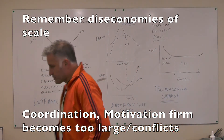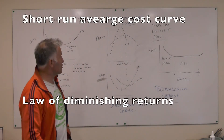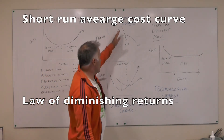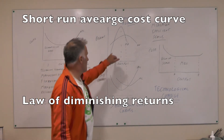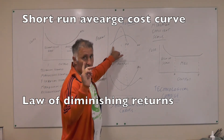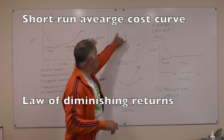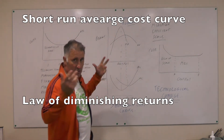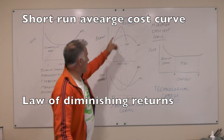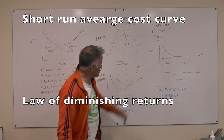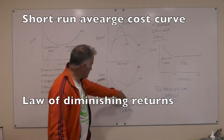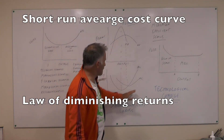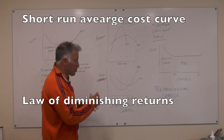In the short run, of course, we always have one fixed factor of production — this is the law of diminishing returns. Marginal product is rising: with five acres of land and one worker you get little output, but the second worker produces much more, so marginal product is higher. Then the marginal product starts to fall, meaning the marginal cost curve starts to rise — the law of diminishing returns is setting in. When the average product starts to fall, the average cost will also start to rise. But those are short run costs.